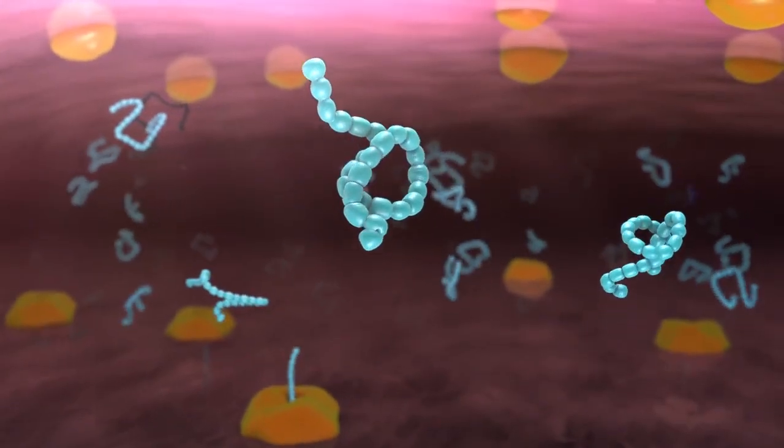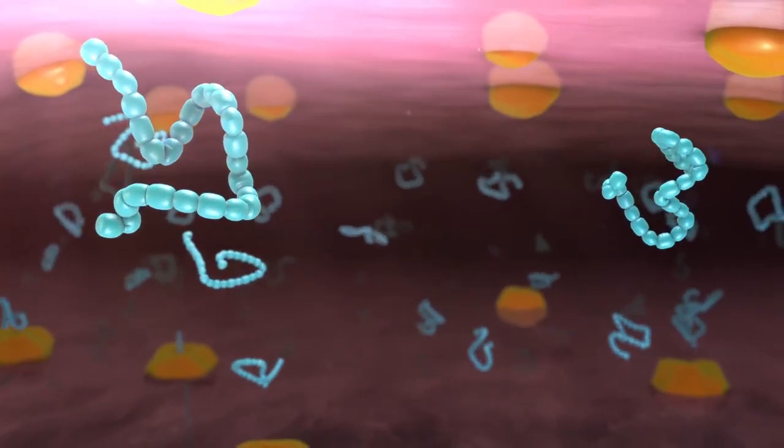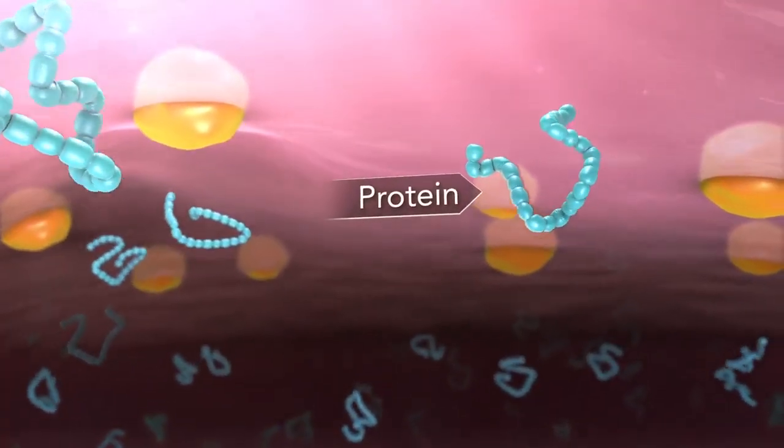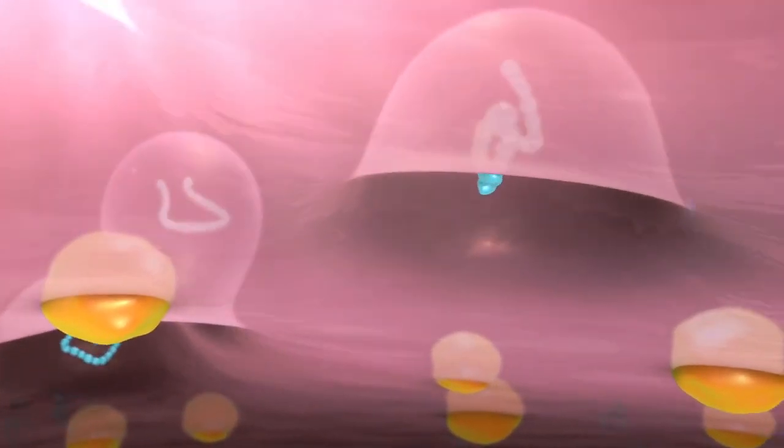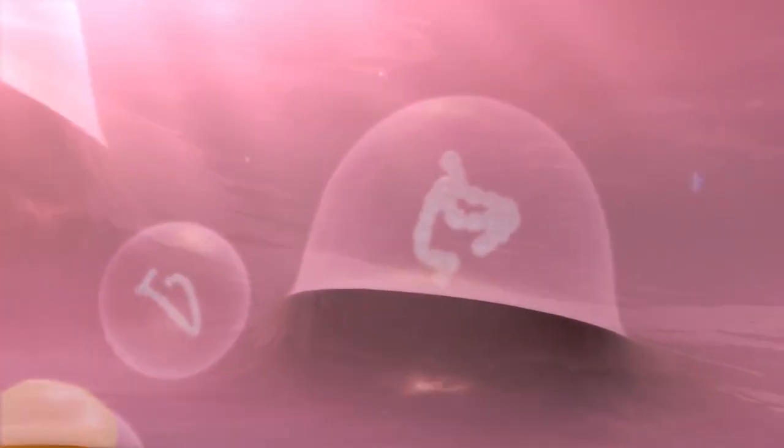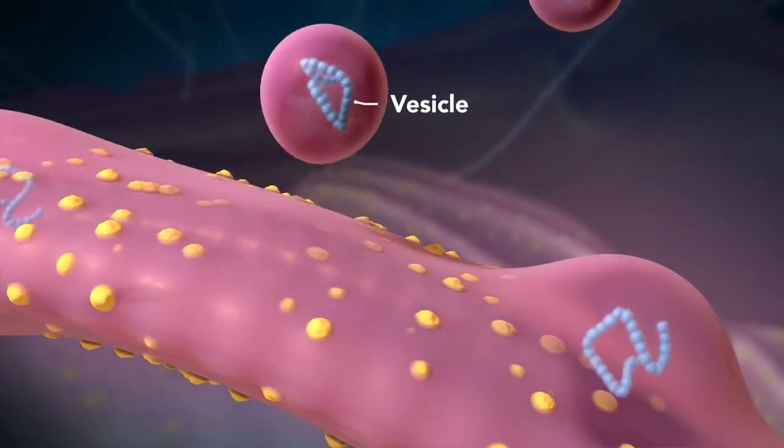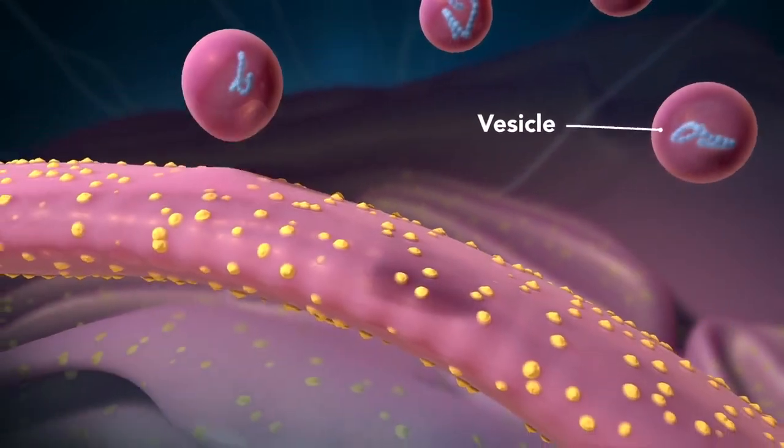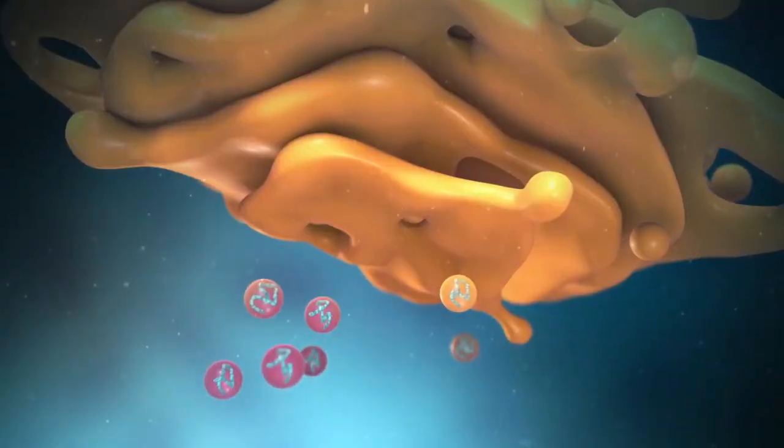The endoplasmic reticulum is a membrane-enclosed passageway for transporting materials, such as the proteins synthesized by ribosomes. Proteins and other materials emerge from the endoplasmic reticulum in small vesicles, where the Golgi apparatus, sometimes called the Golgi body, receives them.